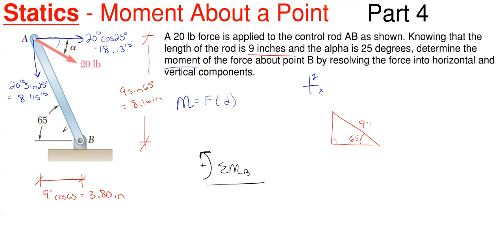So let's start with our vertical here. Well, this vertical Y force will be rotating counterclockwise around B as it comes down and swings around. So that will be a positive 8.45 pounds times its perpendicular distance. Since it is a vertical force, you need a horizontal dimension, so that would be 3.80 inches.